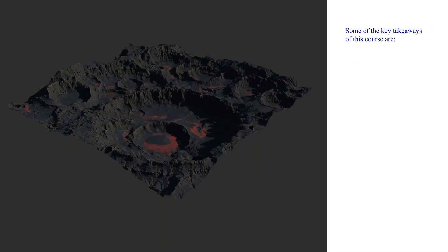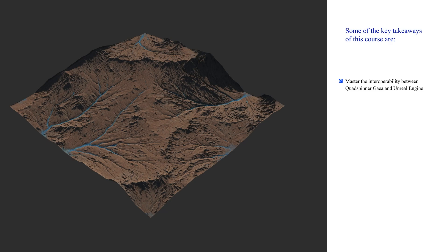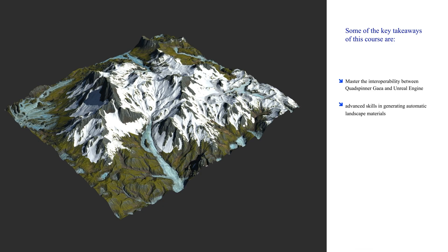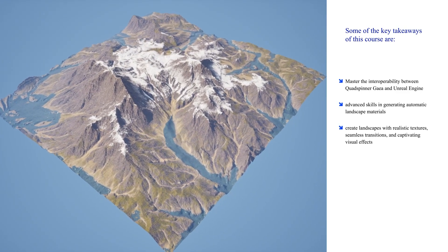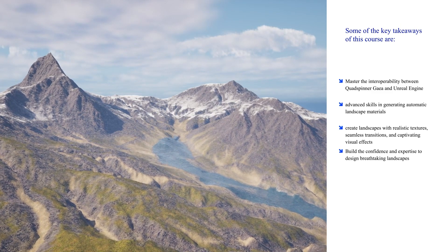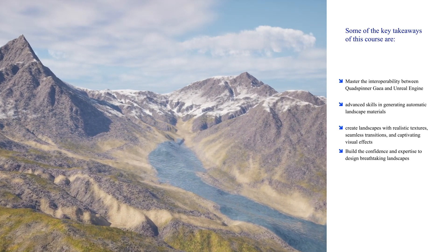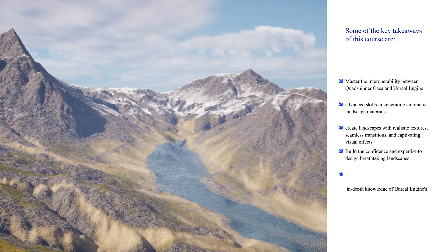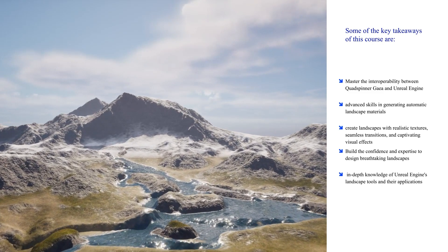Key takeaways from this course include: master the interoperability between Quad Spinner Gaia and Unreal Engine; develop advanced skills in generating automatic landscape materials; learn to create landscapes with realistic textures, seamless transitions and captivating visual effects; build the confidence and expertise to design breathtaking landscapes with ease using Unreal Engine automatic material generation; and gain in-depth knowledge of Unreal Engine landscape tools and their application.